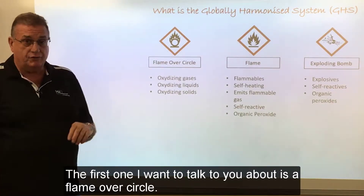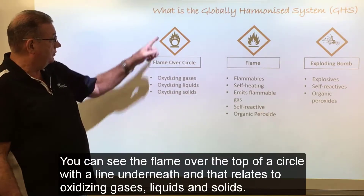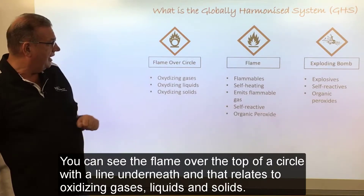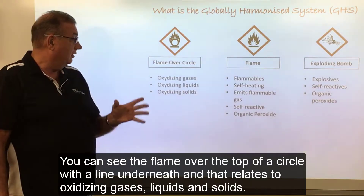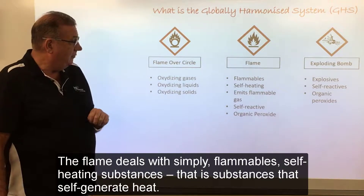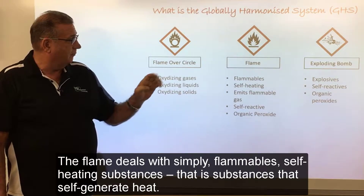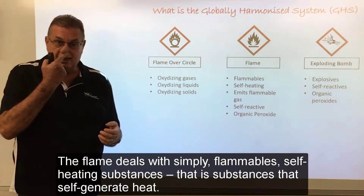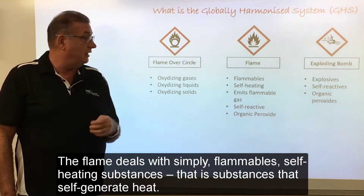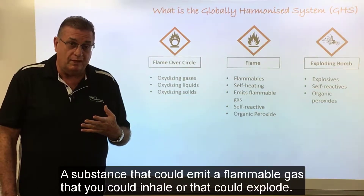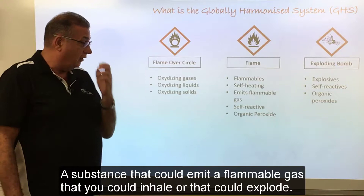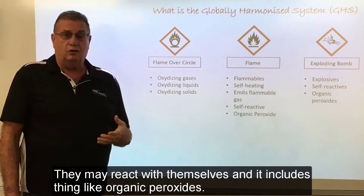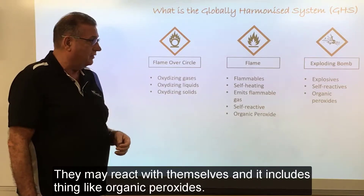The first one I want to talk to you about is the flame over circle. We'll see the flame over the top of a circle with a line underneath, and that relates to oxidizing gases, liquids and solids. The flame deals with simply flammables, self-heating substances — that is substances that self-generate heat — and a substance that could emit a flammable gas that you could inhale or could explode. They may react with themselves and it includes things like organic peroxides.